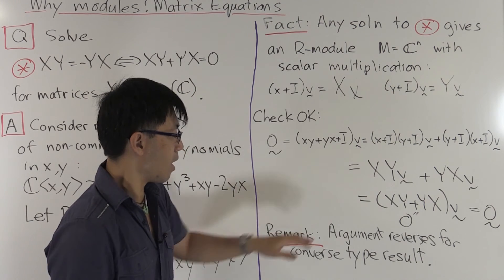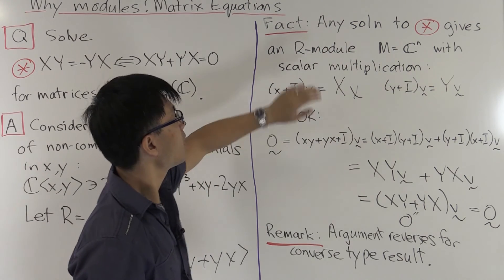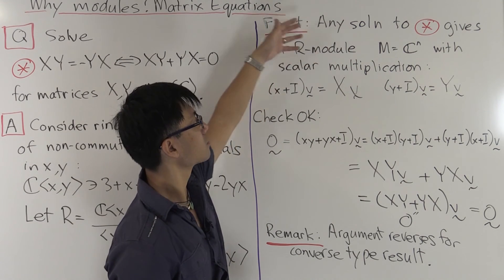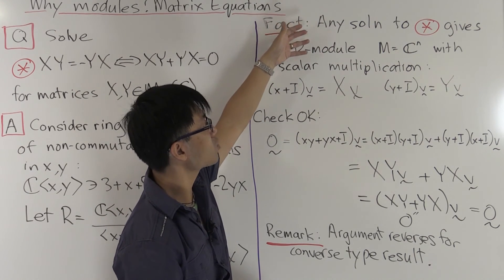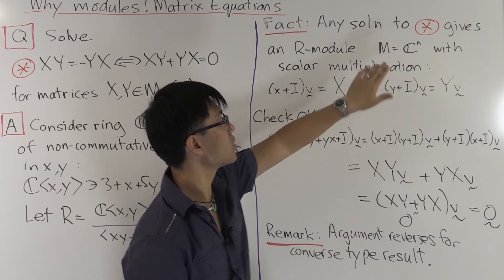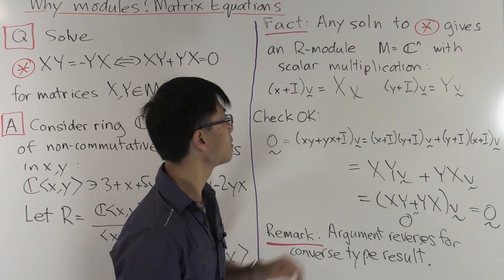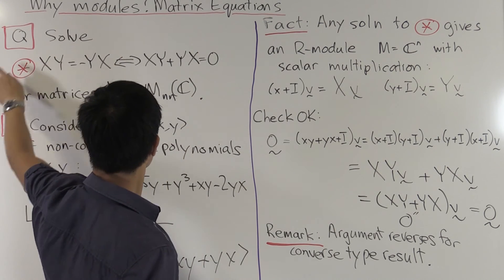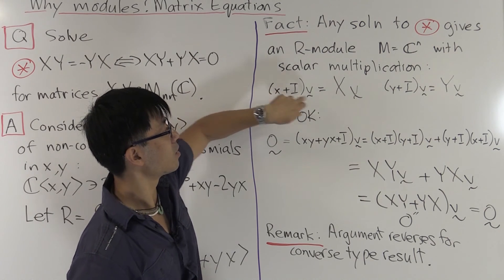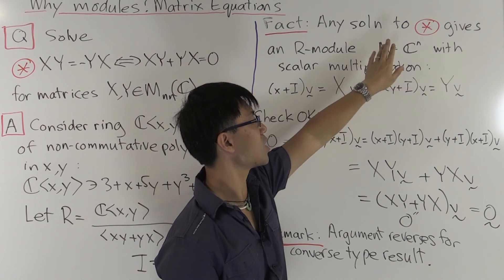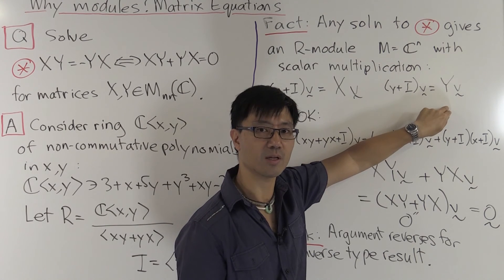What's really nice is that this whole argument reverses. If you're given an R-module — and it reverses most easily when you think of a finite-dimensional one over C — if it's a finite-dimensional R-module M, you can identify it with C^n for some n by picking a basis. Then you get a solution to the matrix equation, just by looking at left multiplication by the coset containing x, which gives you your big X, and left multiplication by the coset containing y, which gives you your big Y. And that gives you a solution to that equation.